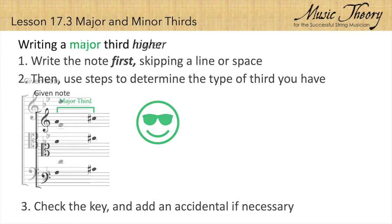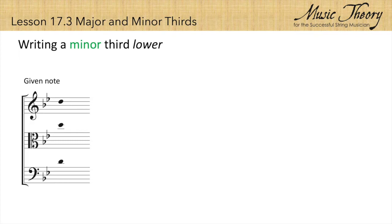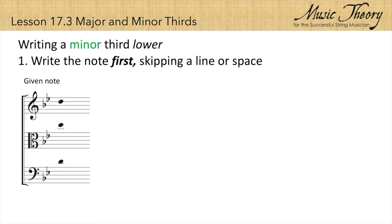Let's do one more. Write the note that's a minor third below the given note. In this case, the given note is D. So the first thing we do is we go down a third from that line to the next line. A third below D is B.